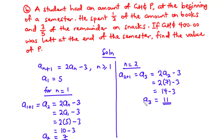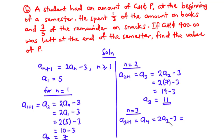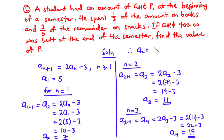Now let's find a_4, which is when n equals 3. From the sequence, a_(3+1) equals a_4 equals 2 times a_3 minus 3. Since a_3 is 11, we have 2 times 11 minus 3, which is 22 minus 3 equals 19. Therefore a_2 is 7, a_3 is 11, and a_4 is equal to 19.